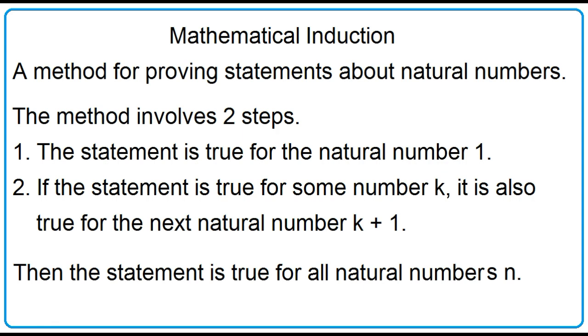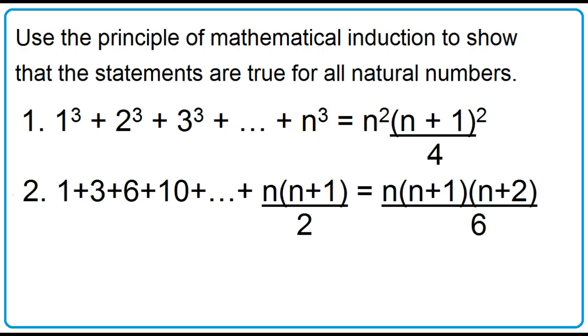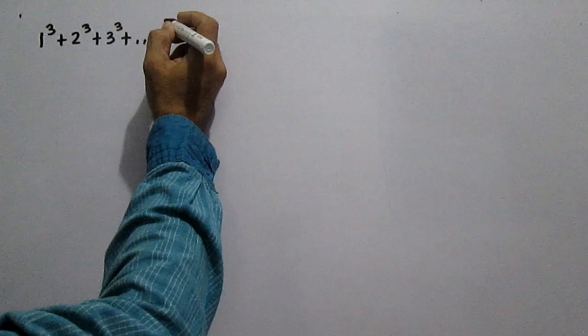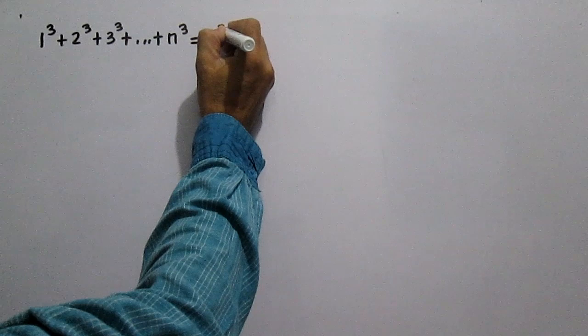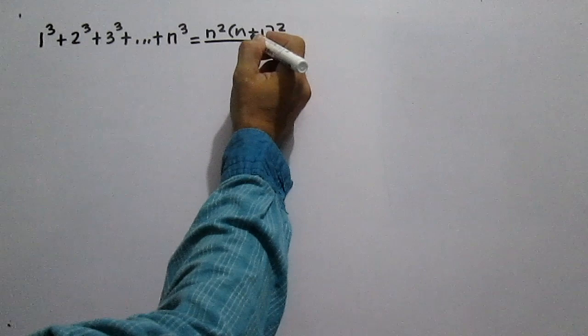Let's use the principle of mathematical induction to show that the following statement is true for all natural numbers: 1 cubed plus 2 cubed plus 3 cubed plus dot dot dot plus n cubed is equal to n squared times the square of the quantity n plus 1, all over 4.